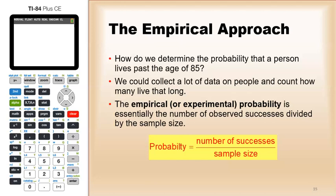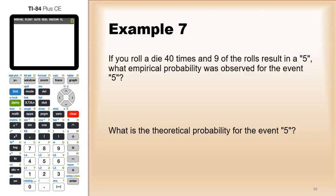For instance, suppose you roll a die 40 times and 9 of the rolls result in a 5. What empirical probability was observed for the event '5'? Well, you had 9 successes in 40 rolls, so the empirical probability is 9 out of 40, which equals 0.225.